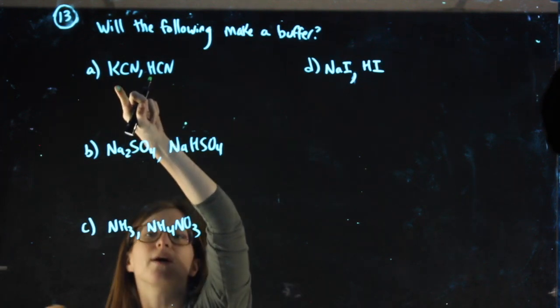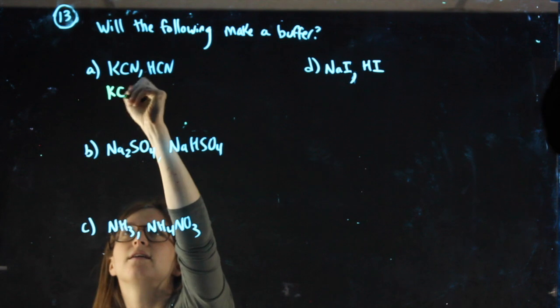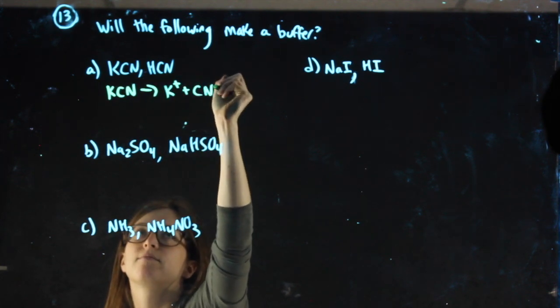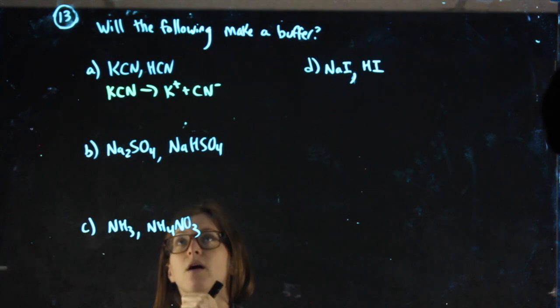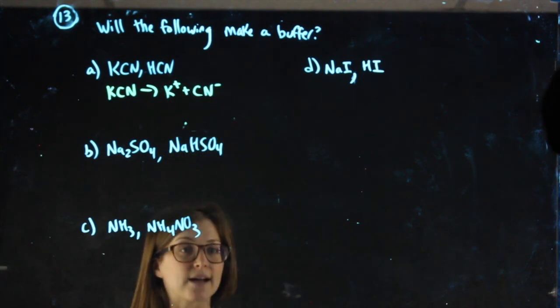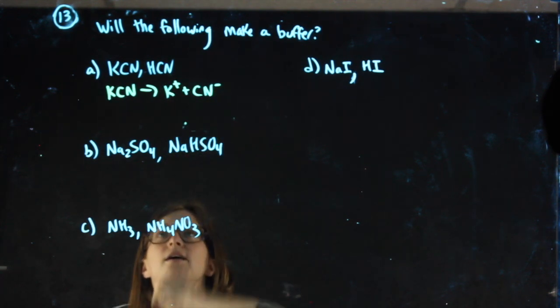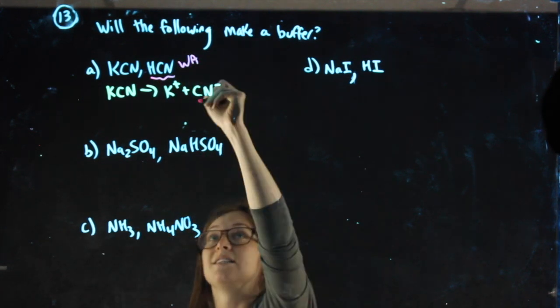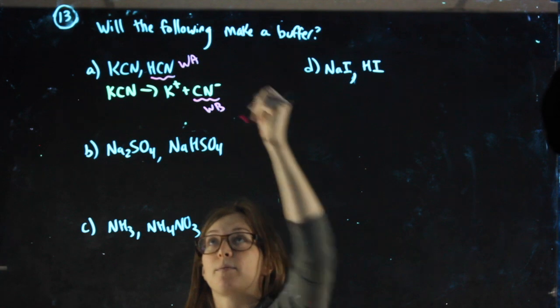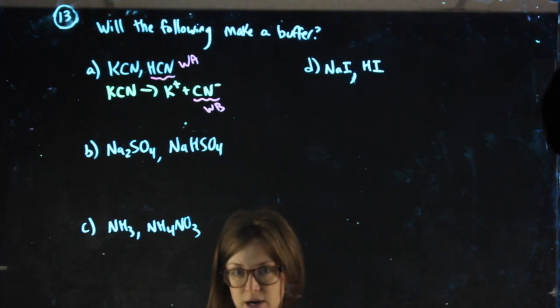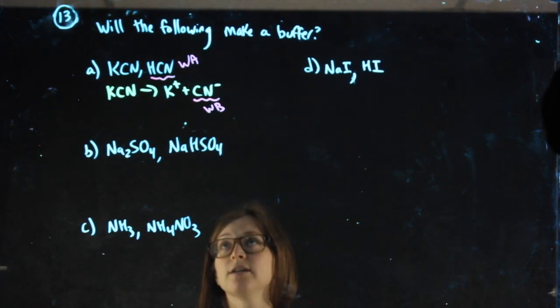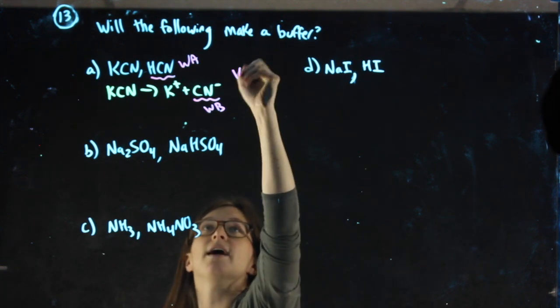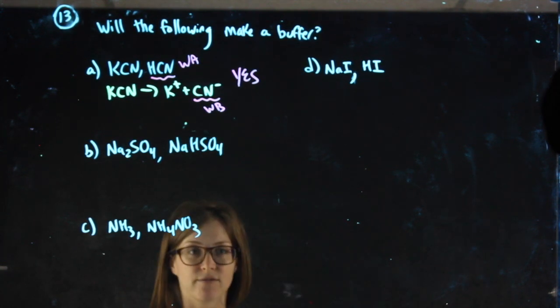KCN is a salt, so I need to dissociate it to see what weak acid or base might be hiding in it. Actually, since HCN is a weak acid, CN- is its conjugate weak base. They're a conjugate pair, different only by one hydrogen, and they're both weak. Neither of them are strong, so yes, this would make a buffer system.